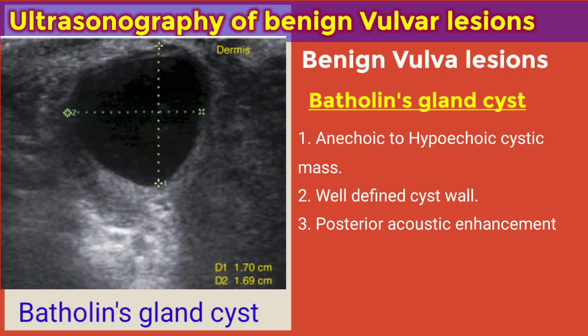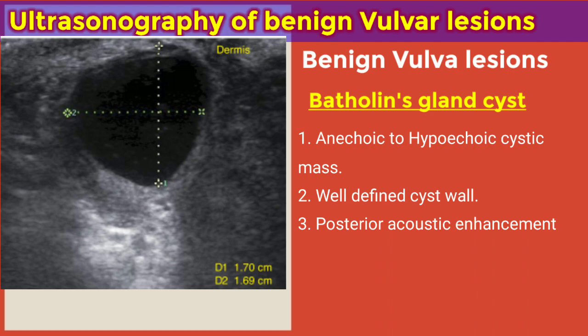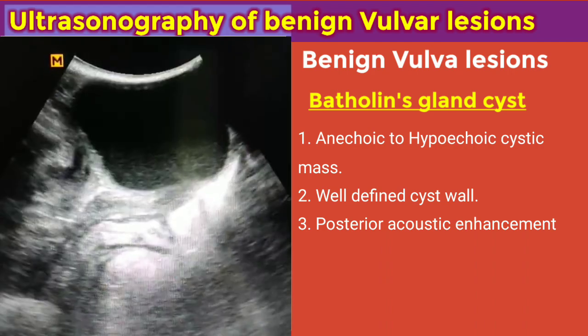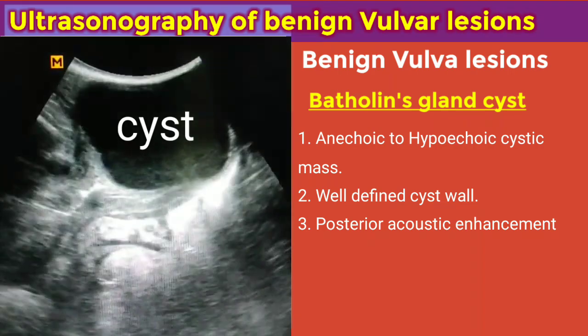Next, we'll be looking at the Bartholin's gland cyst. Bartholin's gland cyst is the most common cystic lesion of the vulva, and it arises as a result of cystic dilatation of the Bartholin's duct. The sonographic features include an anechoic to hypoechoic cystic mass with a well-defined cyst wall, and due to the fluid content, there is presence of posterior acoustic enhancement.